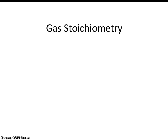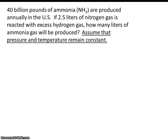In this video, we'll be completing a simple gas stoichiometry problem. 40 billion pounds of ammonia are produced annually in the United States. If 2.5 liters of nitrogen gas is reacted with excess hydrogen gas, how many liters of ammonia gas will be produced? Assume that the pressure and temperature remain constant.